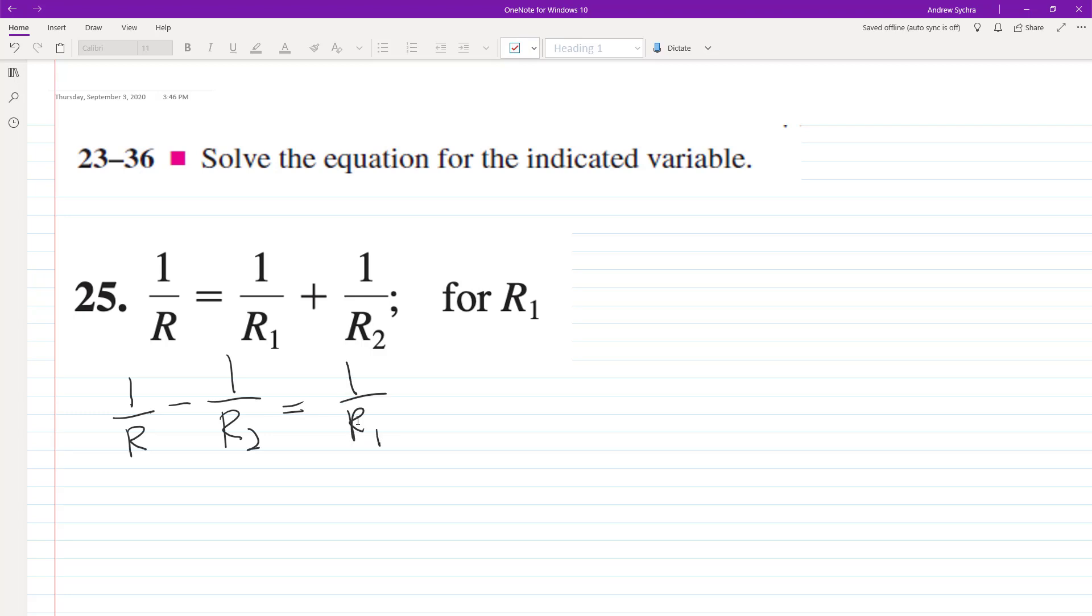So what I'll do on the left side is I'm going to get a common denominator. So I'll have a common denominator of R sub 2. So when we do that, we'll have R sub 2 on top minus R, because you multiply this by R on the bottom R on top, R2 on the bottom R2 on top. So then we have R R2.